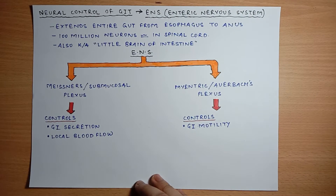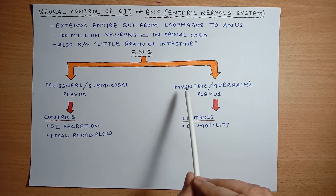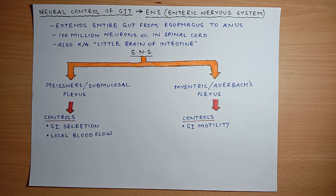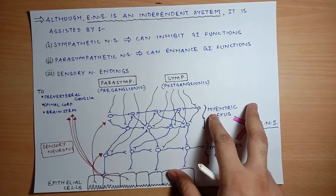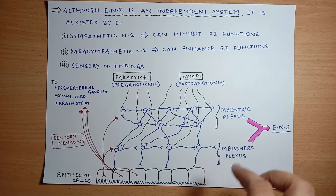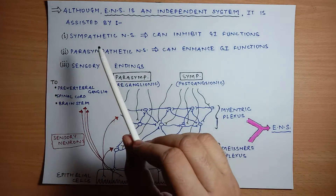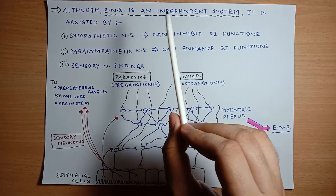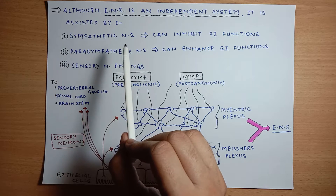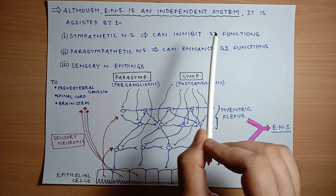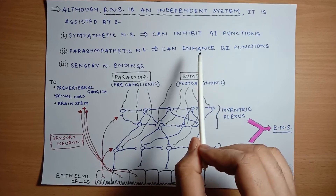To summarize: Meissner's plexus controls GI secretion and local blood flow, while the myenteric plexus controls GI motility. The ENS is an independent system, but it is assisted by three systems: the sympathetic nervous system, the parasympathetic nervous system, and sensory neurons, all of which work to regulate GI functions.